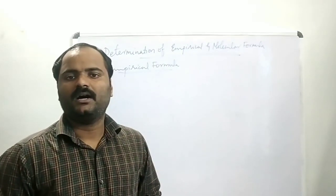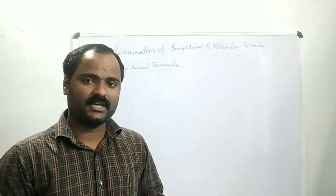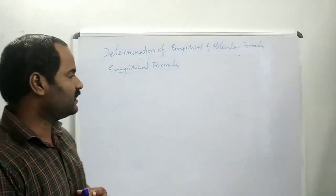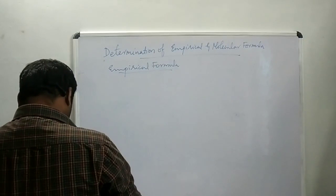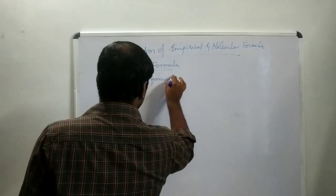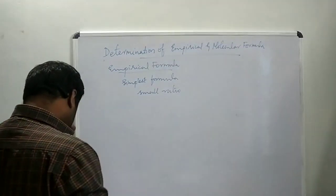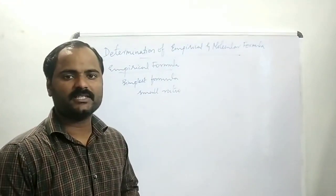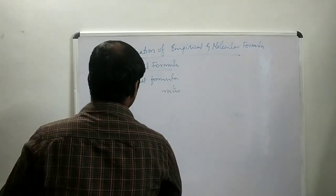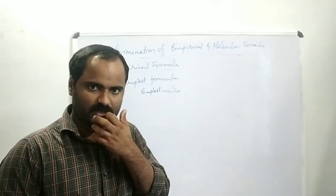Empirical formula is the simplest method to represent a molecule. It gives the simplest ratio of atoms in a compound — the simplest ratio of atoms in a molecule.